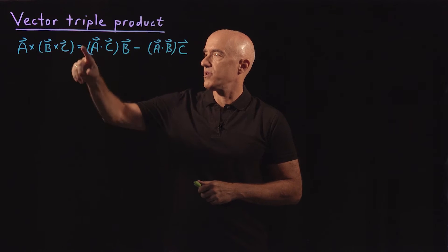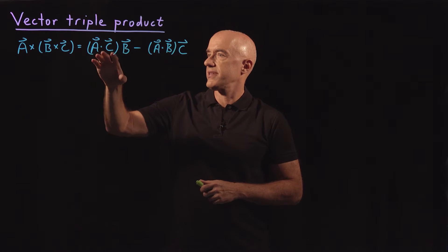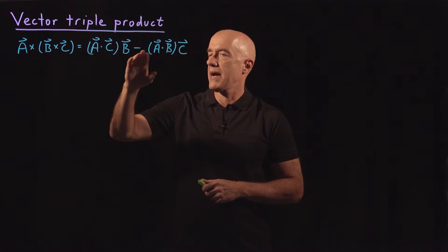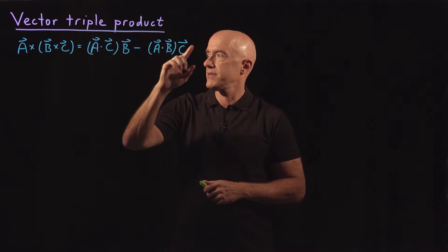So it's A cross B cross C, three vectors, equals A dot C, which is a scalar, times B, which is a vector, minus A dot B times C.